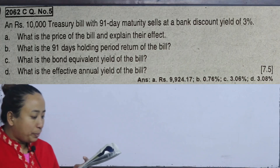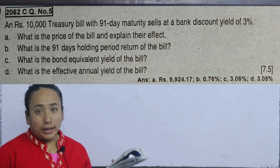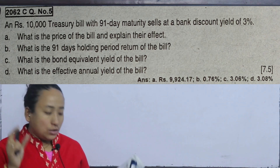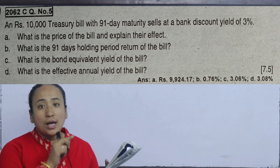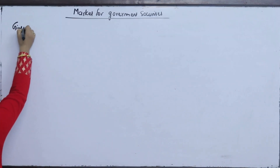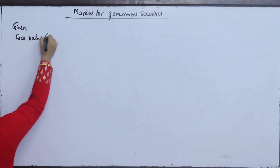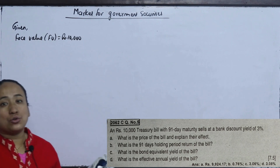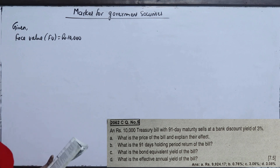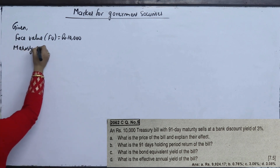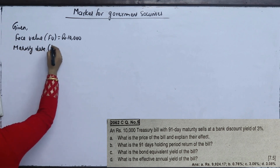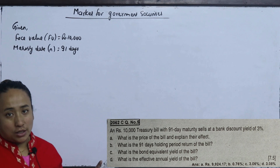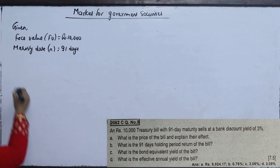The second question involves a rupees 10,000 treasury bill. The face value is 10,000 with a 91-day maturity period.